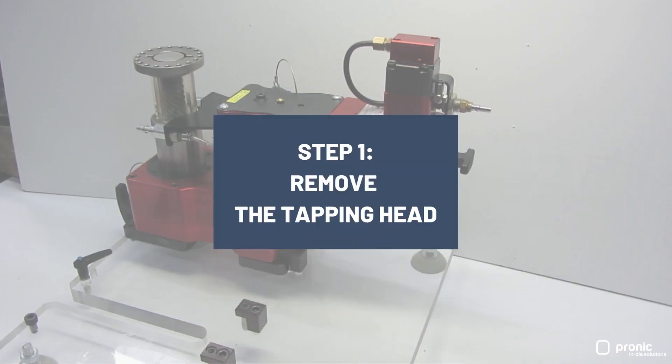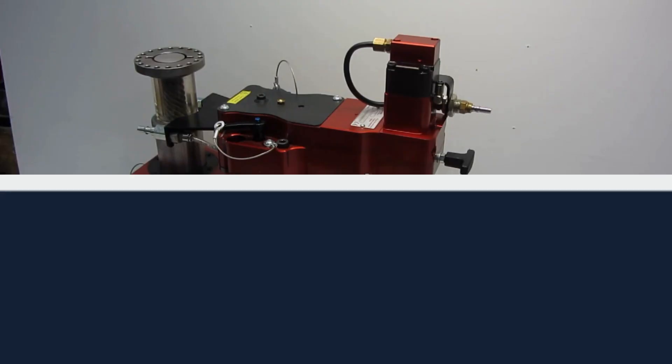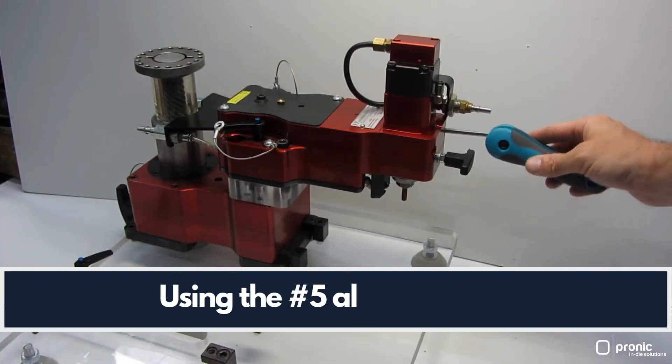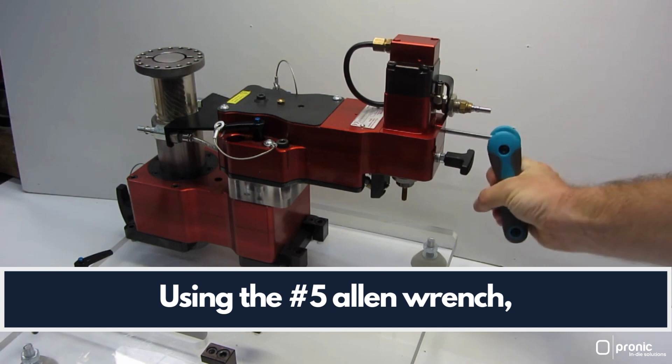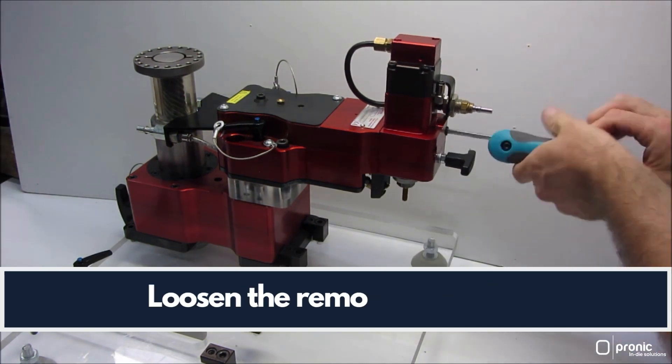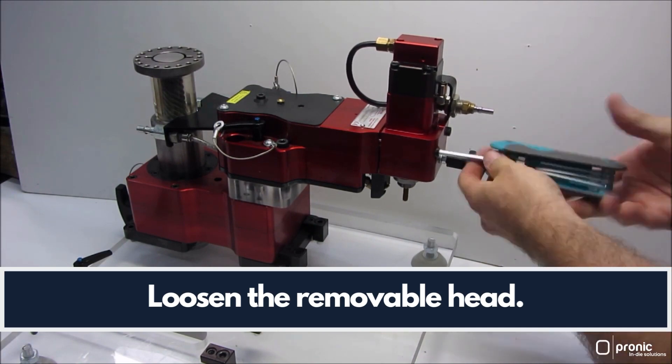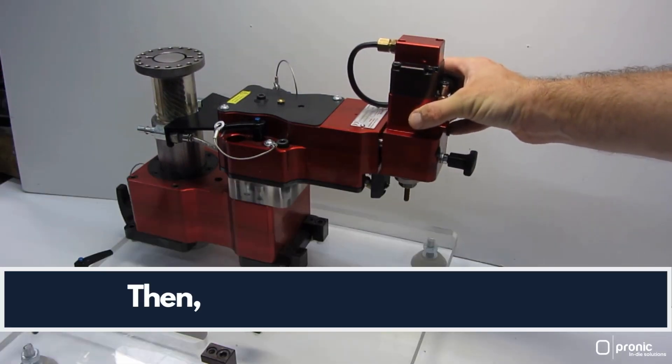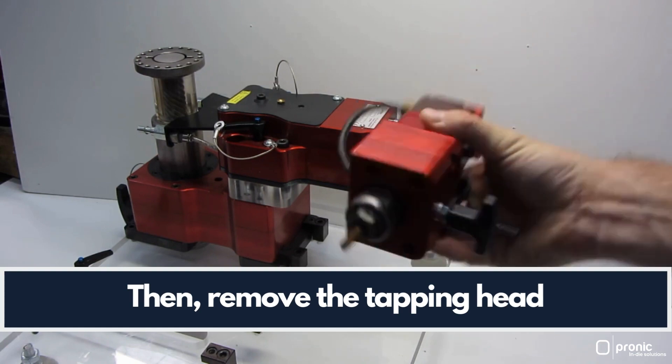Step 1: Remove the tapping head. Using the number 5 Allen wrench, loosen the detachable head. Then remove it and install the head on a flat surface.